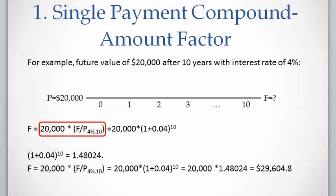So we can summarize this problem as $20,000 times the single payment compound-amount factor, and the factor should be written as F/P with the subscript 4% for the interest rate and 10 for the time difference between present time and future. The single payment compound-amount factor is (1+0.04)^10, and then we calculate the future value F.